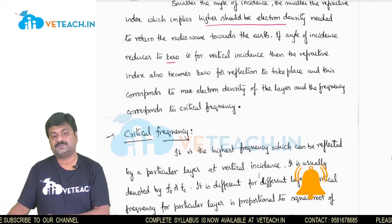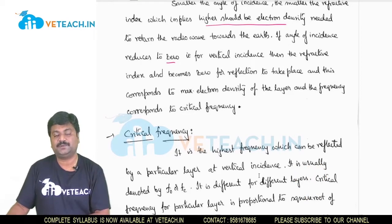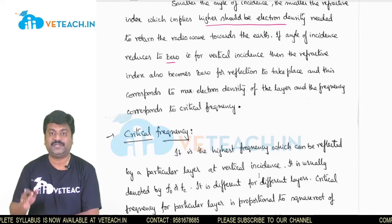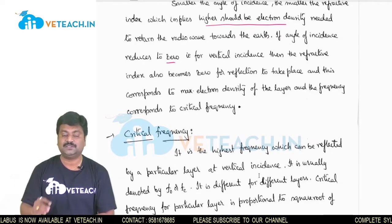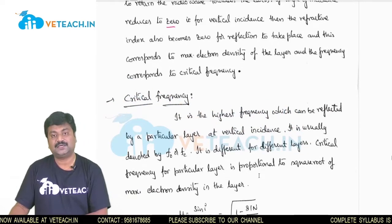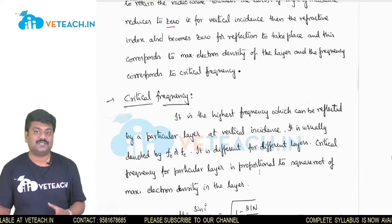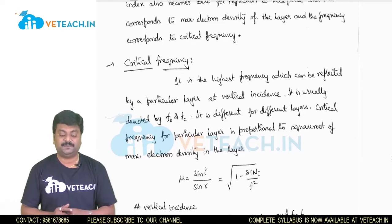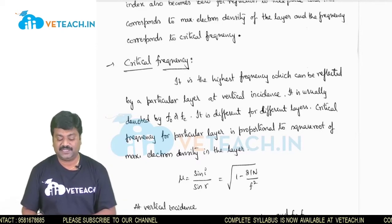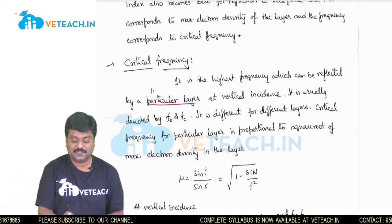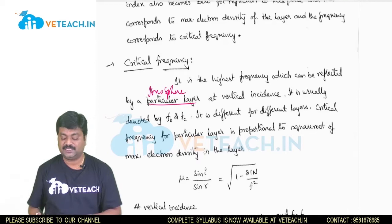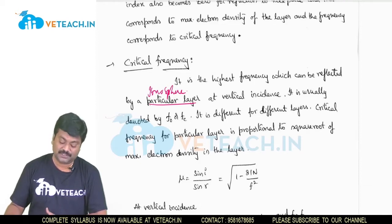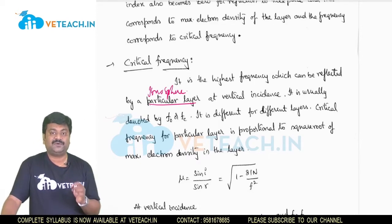Each layer corresponds to a particular electron density, and we need to calculate the critical frequency to reach the point of reflection and have reflected rays return to earth. Critical frequency is the highest frequency that can be reflected back by a particular ionosphere layer. It is denoted by F-naught or FC, and it differs for each layer, with vertical incidence assumed.